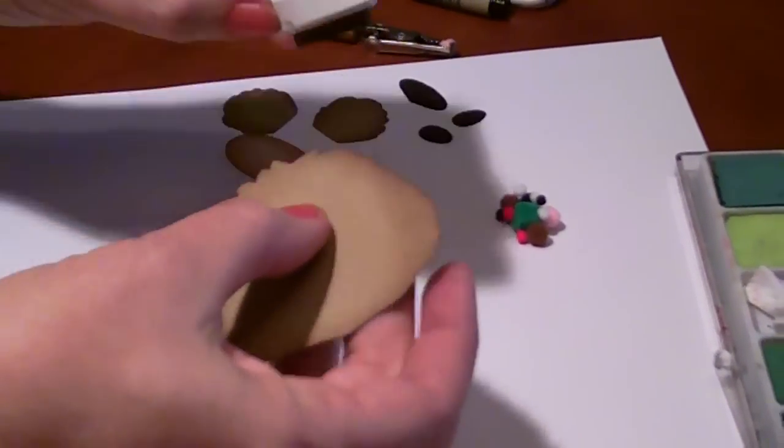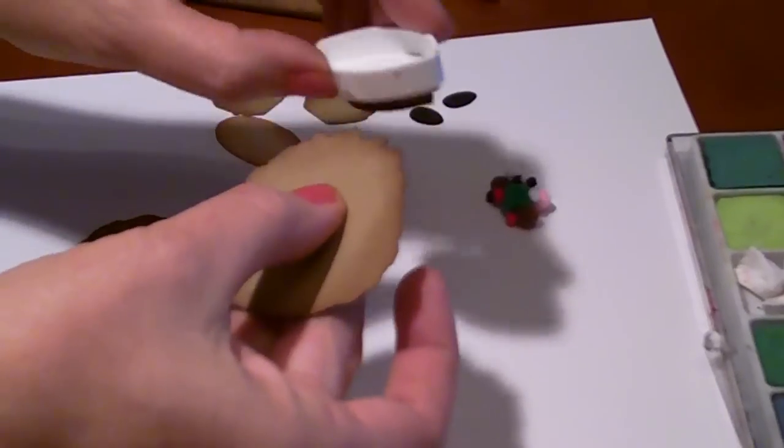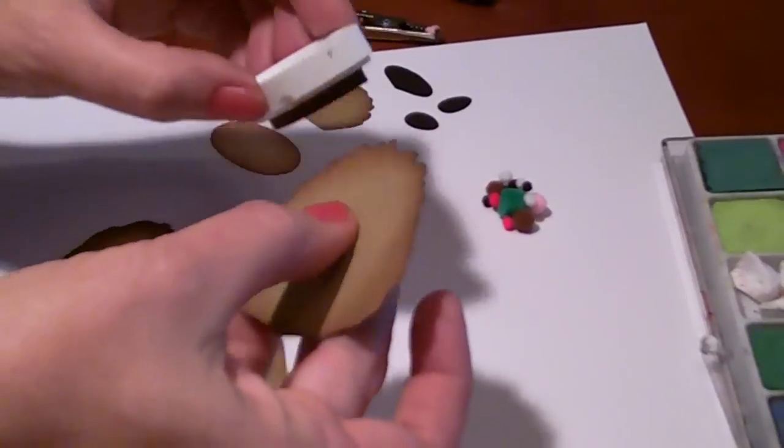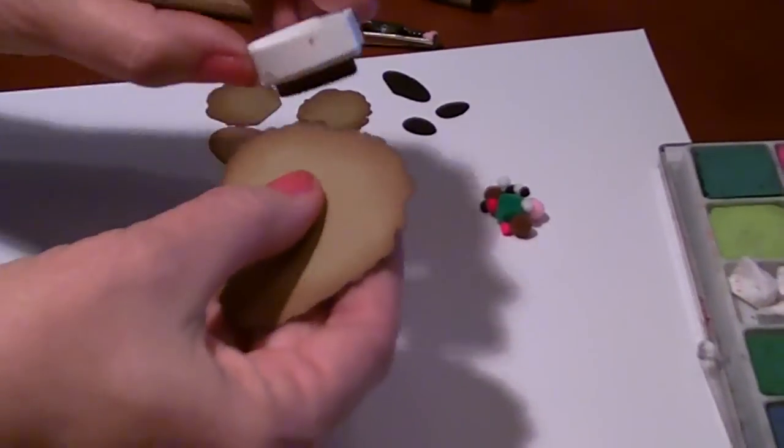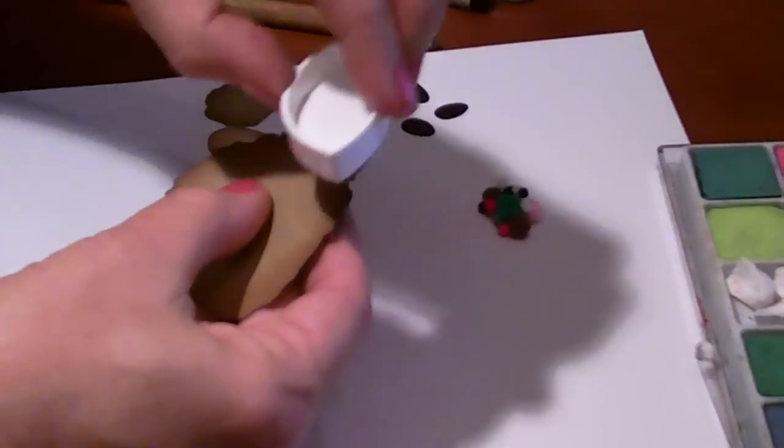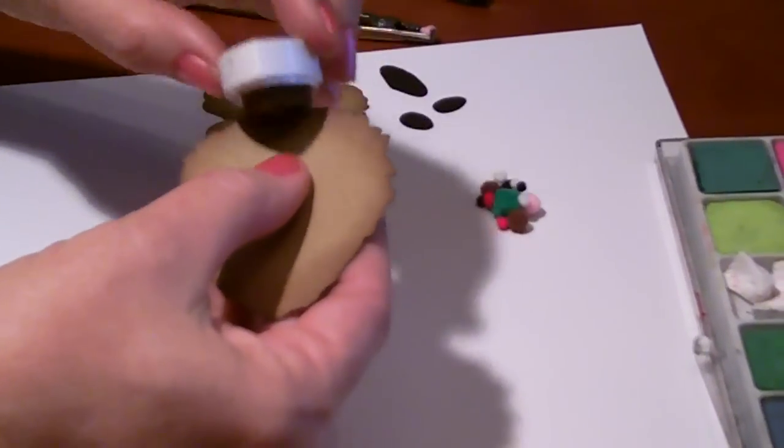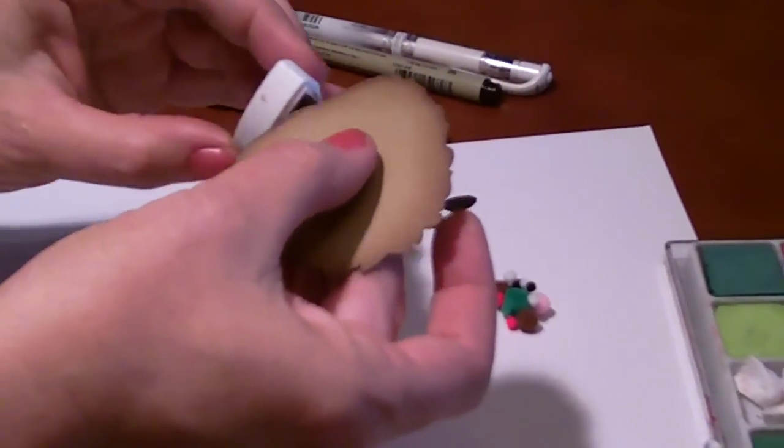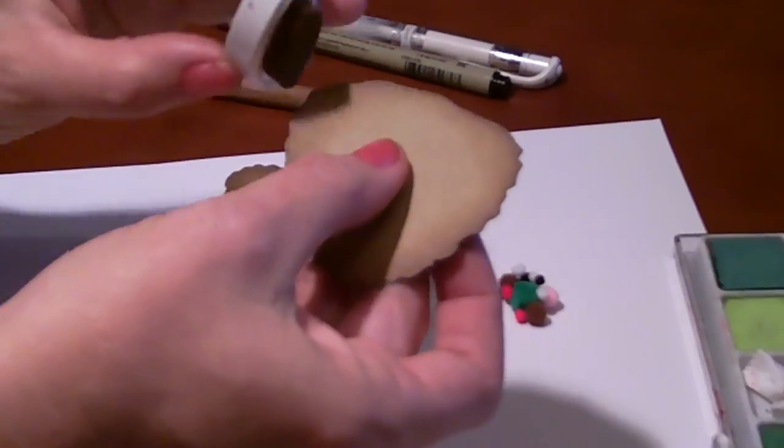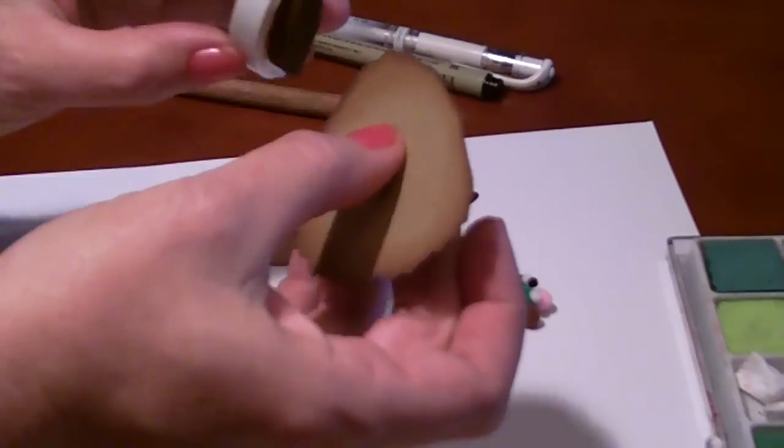This does work better if your pad is not so new. If your pad is brand new, I would practice on dark colored paper because the new ones are too dark on the light colored paper. If you want a little bit deeper edges, then you hold it vertically.